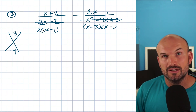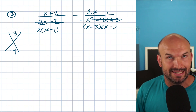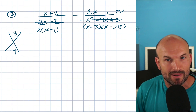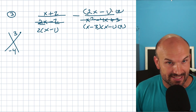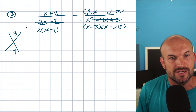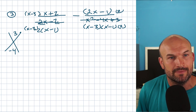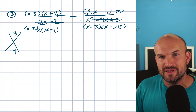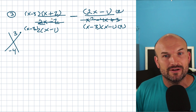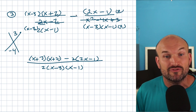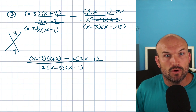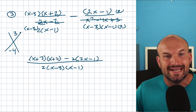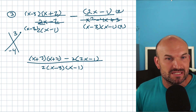However, the left side has a two and an X minus one, while the right side has X minus three and X minus one. The left side is missing the X minus three, and the right side is missing the two. So I'll multiply the left fraction by X minus three on the top and bottom, and the right fraction by two on the top and bottom. Since this is a subtraction problem, I'll rewrite the expression over the common denominator, keeping track of the negative sign. Sometimes with multiple parts it's easiest to just rewrite everything slowly in a clean version.